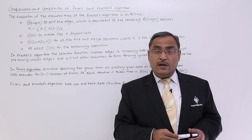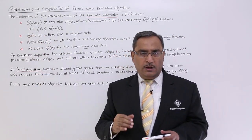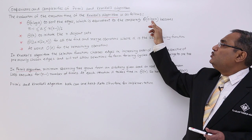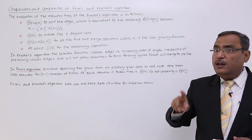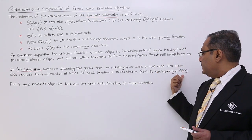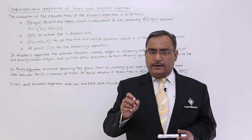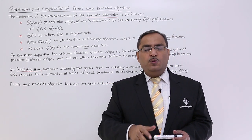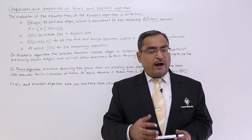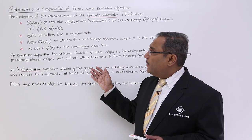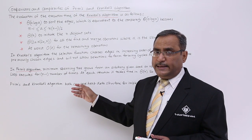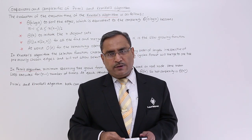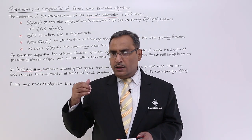For the sparse graph, where the value of A is very near to n minus 1, in Kruskal's algorithm the complexity expression becomes Θ((n−1) log n), which is Θ(n log n). But Prim's algorithm complexity still remains Θ(n²). Since Θ(n log n) is obviously less than Θ(n²), for the sparse graph we will be using Kruskal's algorithm rather than Prim's algorithm to find the minimum spanning tree. This is the comparison, the contrast, and the respective complexity calculations of Prim's and Kruskal's algorithm.